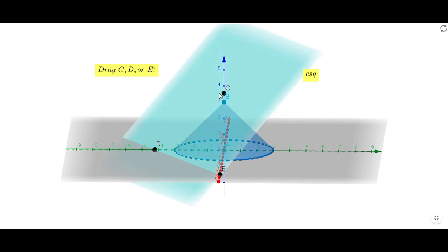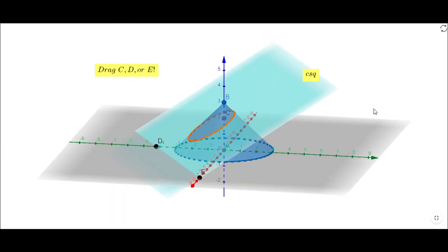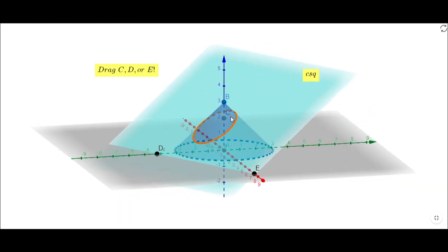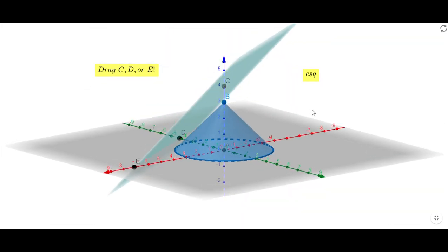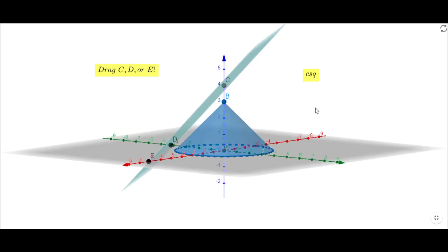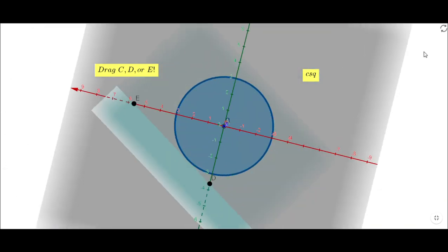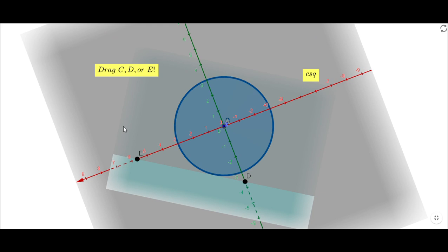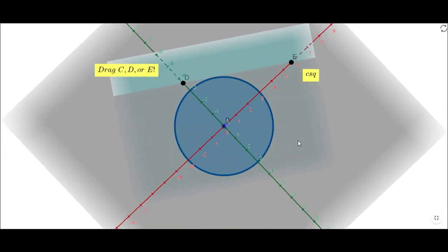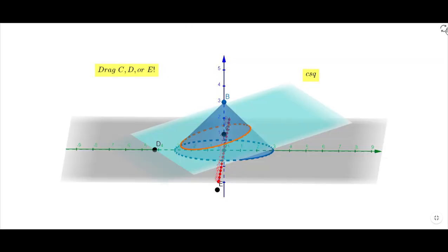You may notice that if point C is above the vertex, we have this situation where there is no intersection. Of course, you can have a special case when you can get that slant height as an intersection between the plane and the cone.